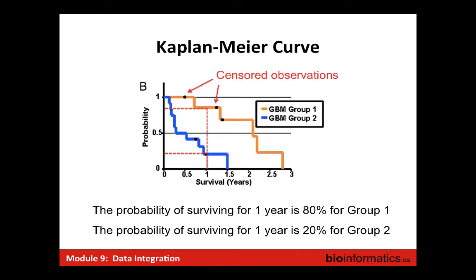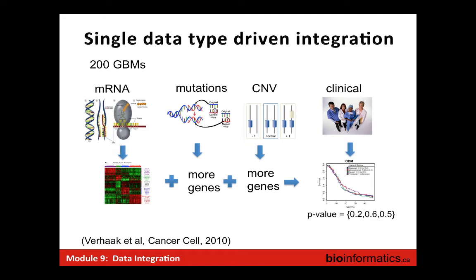You also see dots on the Kaplan-Meier curves — these are censored observations. These are individuals who either fell out of the study or whom the researchers weren't able to follow through to the end.